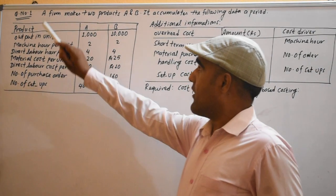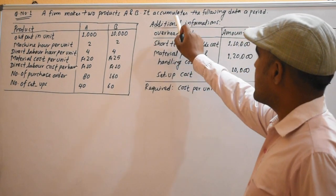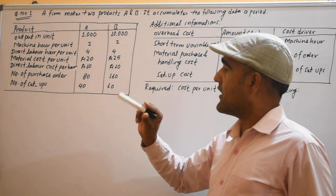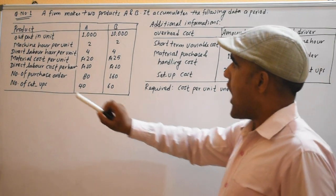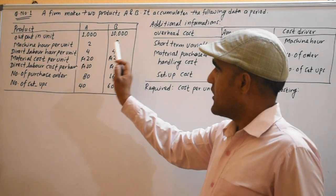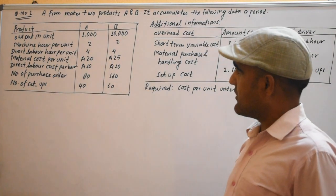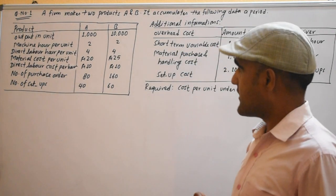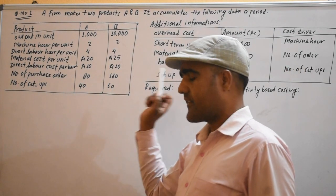A firm makes two products, A and B, and accumulates the following data. Output in units: 1,000 and 10,000. Machine hours per unit: 2 and 2. Direct labor hours per unit: 4 and 4. Material cost per unit: $20 or $25. Direct labor cost per hour: $10 and $10. Number of purchase orders: 80 and 160. Number of setups: 40 and 60.